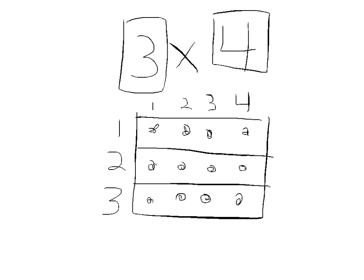So, 3 times 4 is 1, 2, 3, 4, 5, 6, 7, 8, 9, 10, 11, 12. And equals 12.